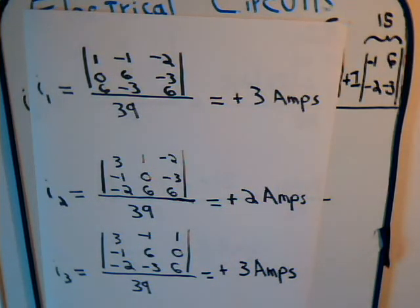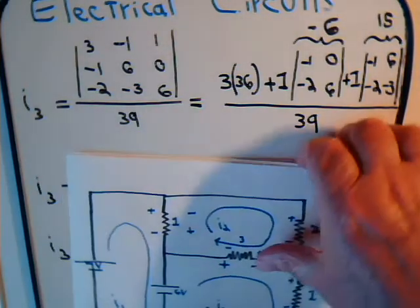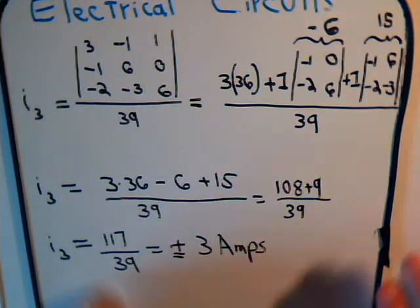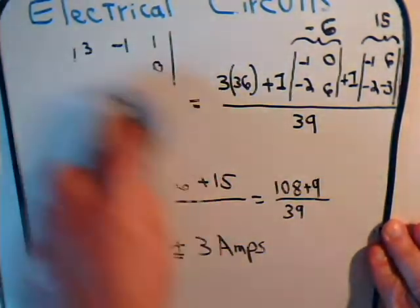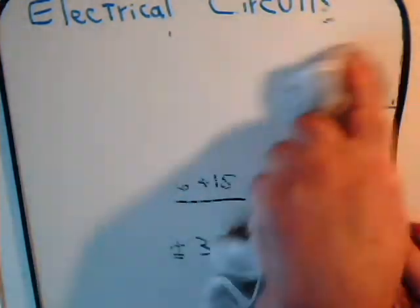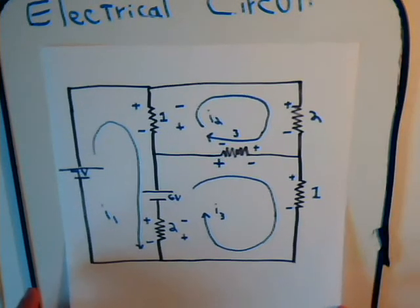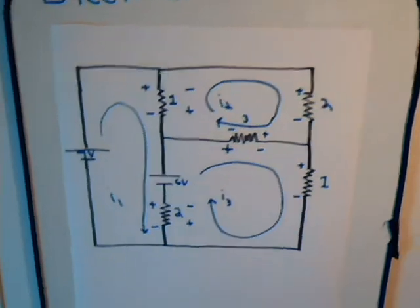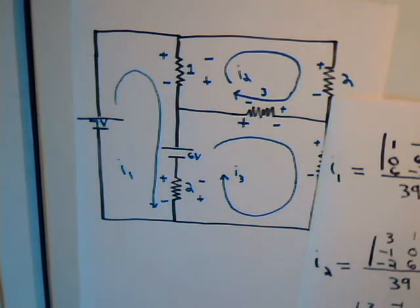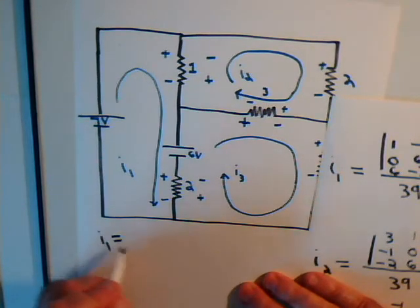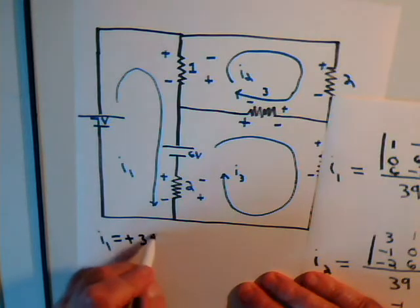Let's go back and look at our original circuit. Before we do that, we don't need this anymore, so let's get rid of this. Here's the original circuit. And we have now determined that I1 is plus 3 amps.